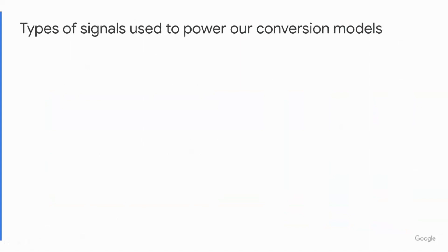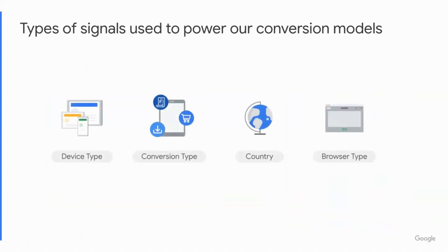Here are some examples of the signals that we actually use. We could have device type — it could be tablet, desktop, or mobile devices. Another signal is conversion type, which could be any event you think is important, like download, purchase, or add to cart. It could be the country where the users are coming from, and it could be the browser types they're using, like Safari, Chrome, or Firefox, etc.